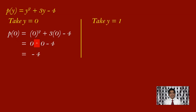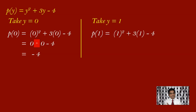Let us take another value. Now I will take y is equal to 1. We have to find p of 1. So we get 1 square plus 3 of 1 minus 4. 1 square is 1, 3 ones are 3, minus 4 stays as constant. So 1 plus 3 is 4, 4 minus 4 is 0.